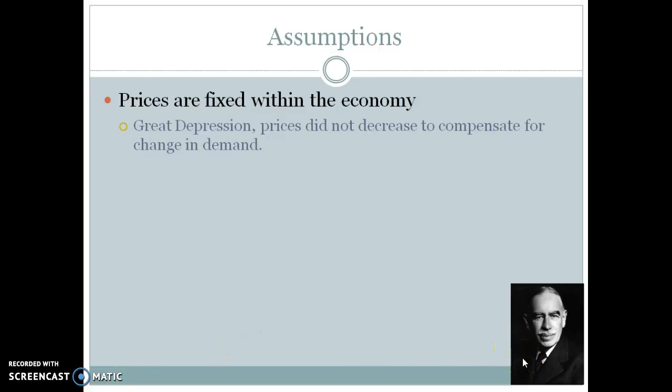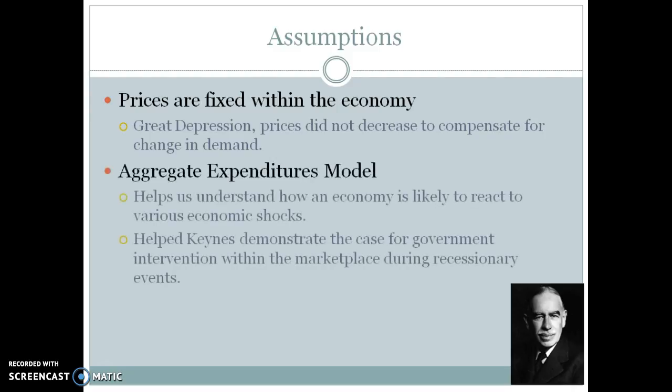John Maynard Keynes was a British economist who developed a school of thought that runs counter to Adam Smith's classicalists. During the Great Depression, he noticed that as demand dropped, prices didn't really change in the economy. So he set about creating a model to help understand why, and it helped him convince the government that intervention in the economy was sometimes necessary.